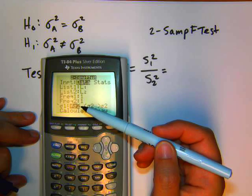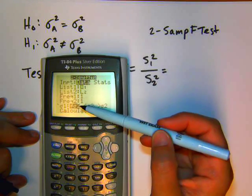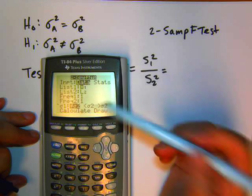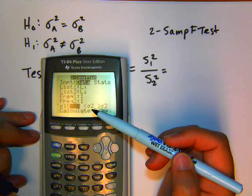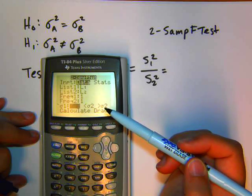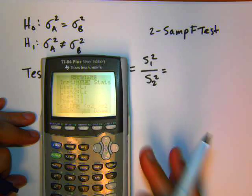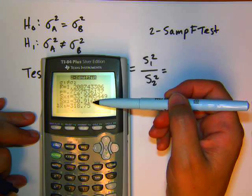The alternative hypothesis sign needs to be changed depending on what you're doing. We were doing a two-tailed test, so make sure you have not equal highlighted. So as you arrow down, make sure it's blinking on there and ENTER so that it's highlighted. Of course, if you're doing a left-tailed test, you'd do the less than sign. If you're doing a right-tailed test, you'd do the greater than sign.